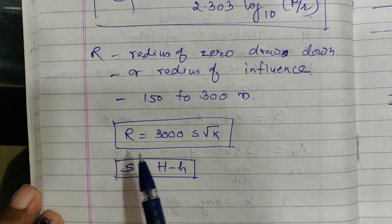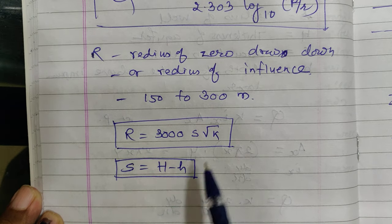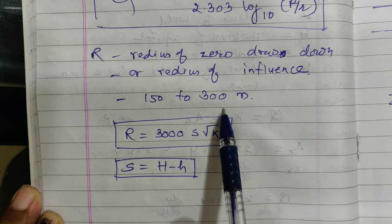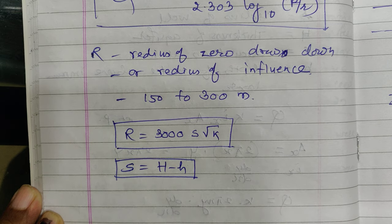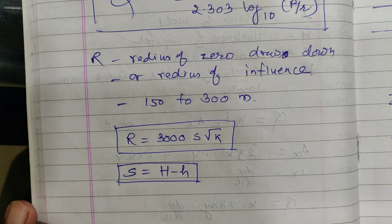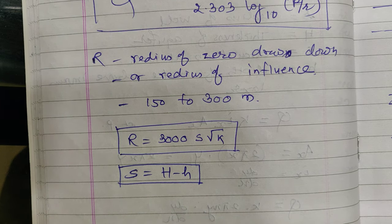The range R is normally 300 × s × √k, ranging from 150 to 300 meters. This completes the derivation, and the next topic will be covered in the next video.